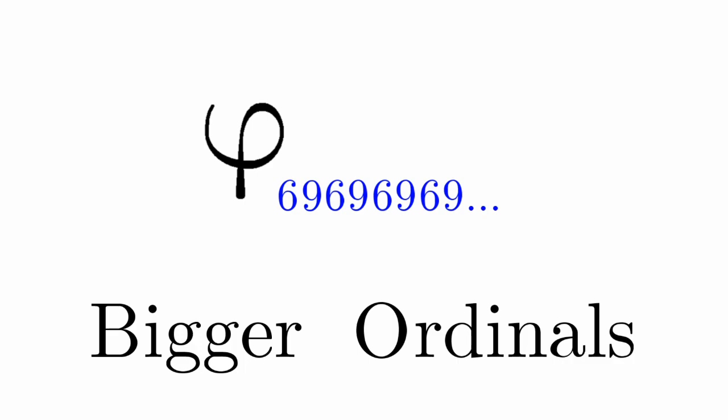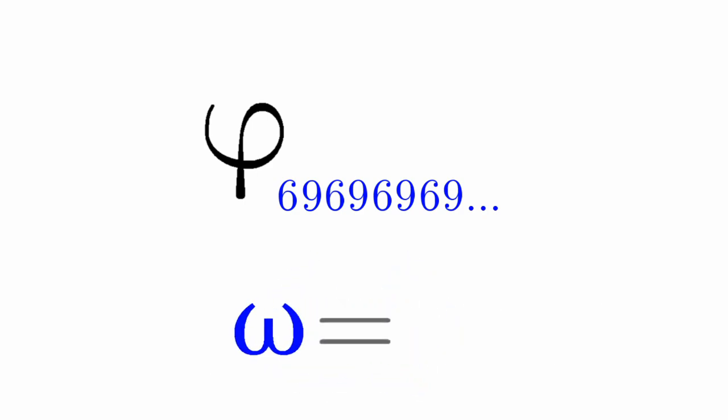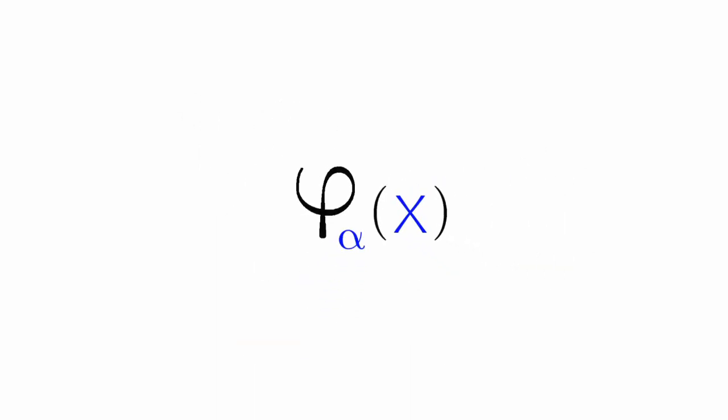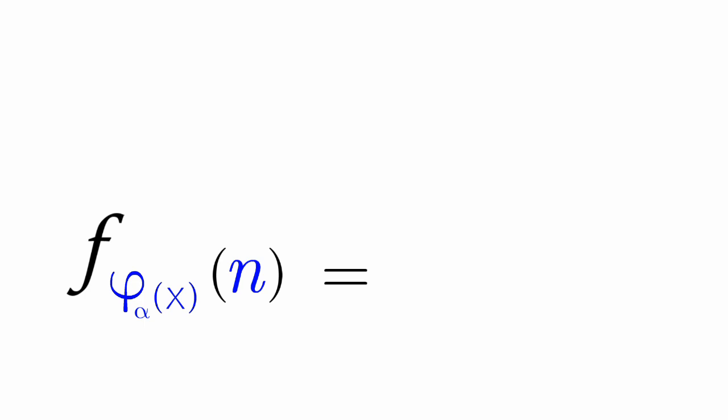Remember, Omega is just equal to Phi 0, and Epsilon is just equal to Phi 1. So, how do we use Phi Alpha of X in the fast-growing hierarchy? We simply plug it under F. Alternatively, it can also be written like this.